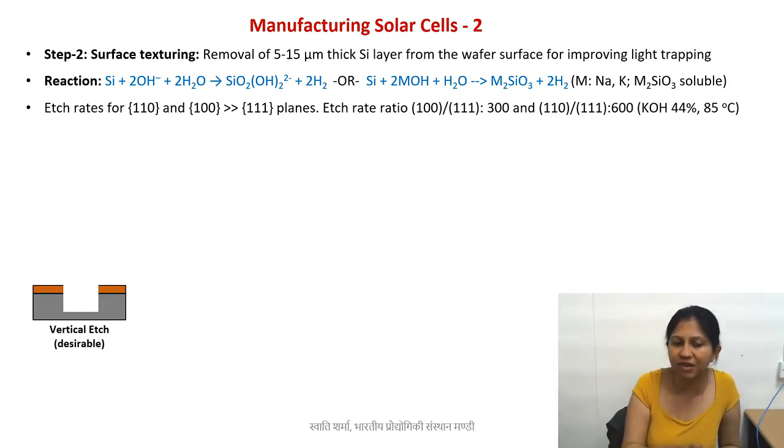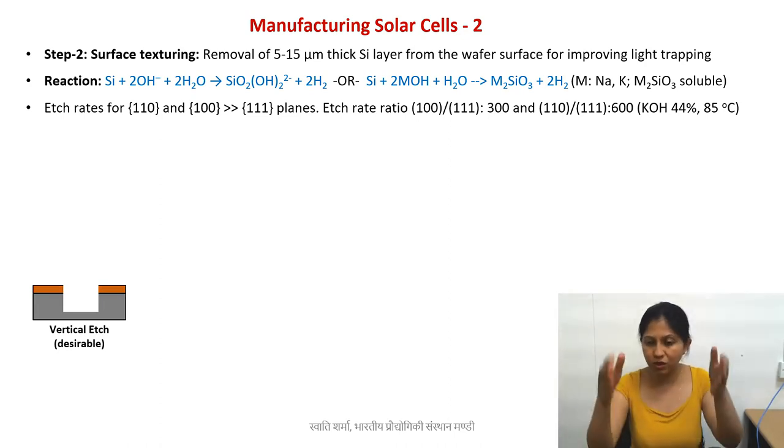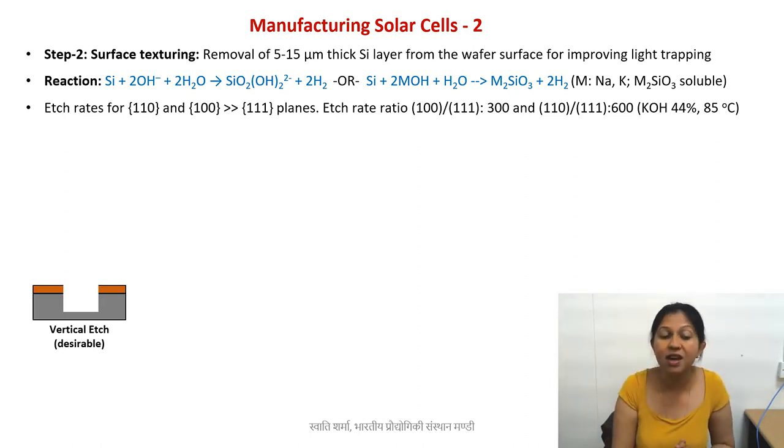The first schematic shown here is of a vertical edge, which is what we expect when we etch something. This orange-brown layer on top of the silicon wafer is a cross section showing a mask, which can be a polymer mask. I'm showing it with the mask for explaining how different types of etches create different patterns.